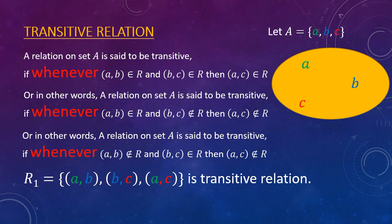Let us dive into some deeper concepts of transitive relation. A relation on set A is said to be transitive if whenever (a,b) ∈ R and (b,c) ∉ R, that is this relation is not there, then (a,c) ∉ R. This is also a transitive relation.